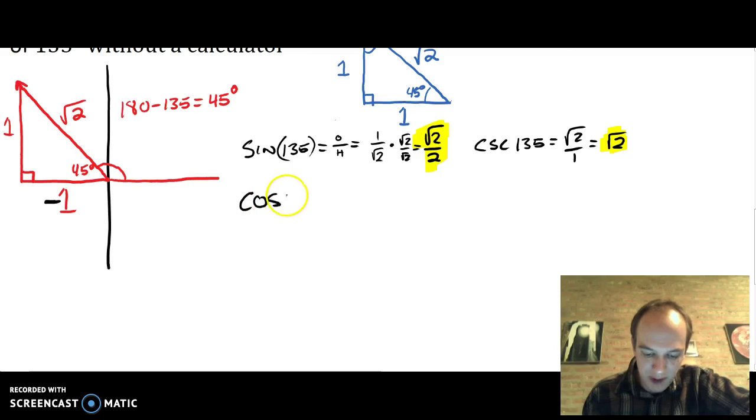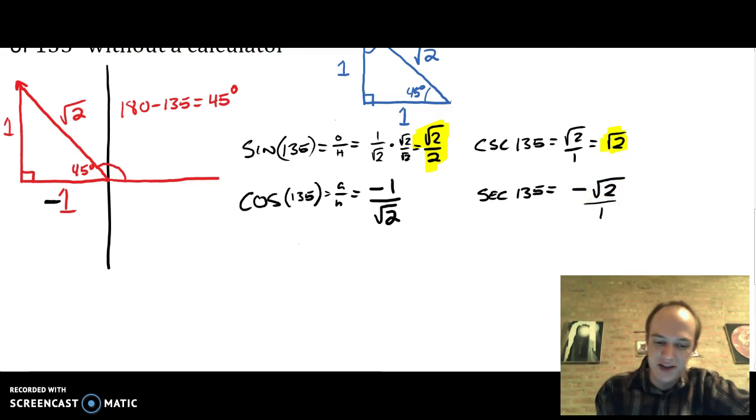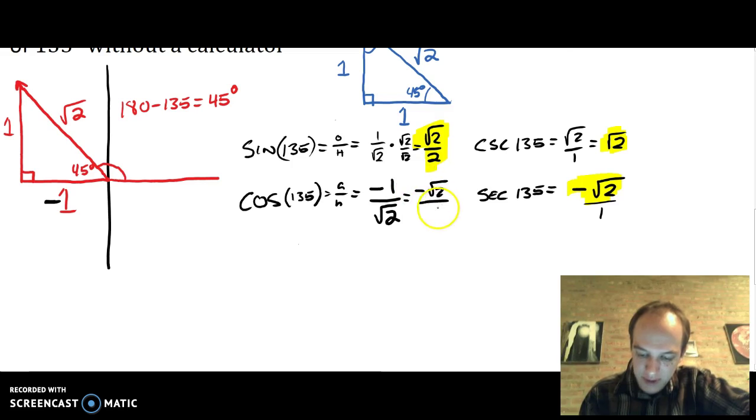Cosine of 135°. This one is adjacent over hypotenuse. So now I need to use that negative one and the square root of two. I'm going to go ahead and do the secant of 135°. That's going to be negative square root of two divided by one or just negative square root of two. All right, I have a final answer here. Going back to rationalize the original, this is going to be the same as negative root two over two.